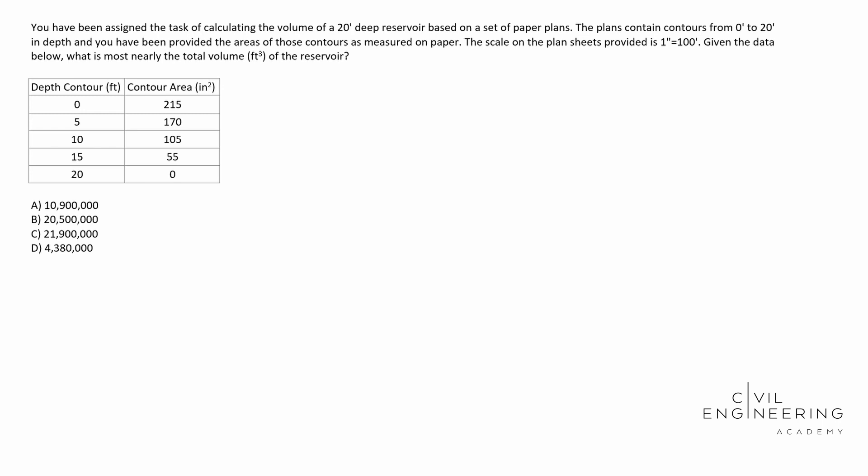Alright, so a lot in this. Basically what it's saying is you were given a set of paper plans. On those paper plans, you have those contours. You're looking at contours. If you don't know what contours is in this problem, I would imagine that a reservoir is almost like a square. And so if we're looking down at the sheet of paper, it's going to look something like this, right?